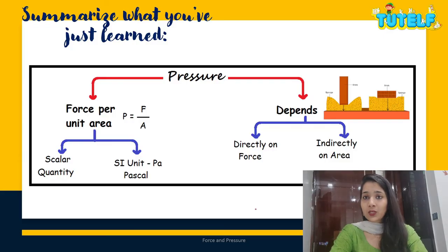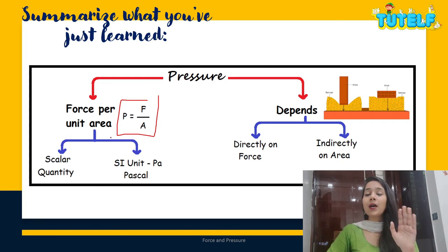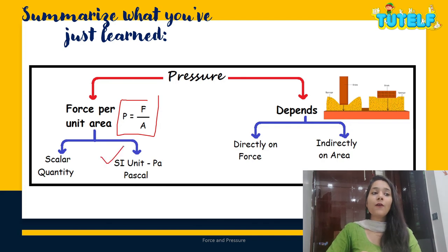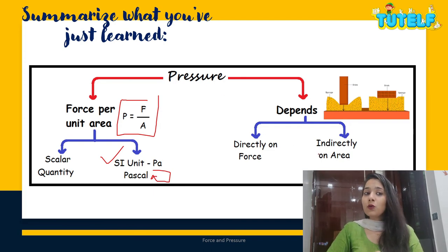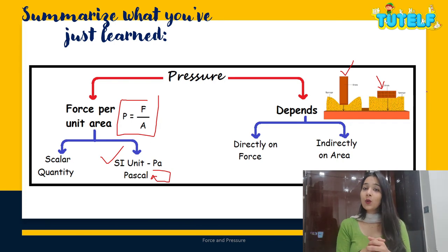Let's summarize: pressure is force per unit area, formula P equals F divided by A. It is a scalar quantity — it has only magnitude, no direction. If it has a direction, it is thrust, not pressure. The SI unit of pressure is pascal, named after the scientist Pascal. Pressure depends directly on force and inversely on area, as illustrated by a brick standing versus lying flat on a sponge.